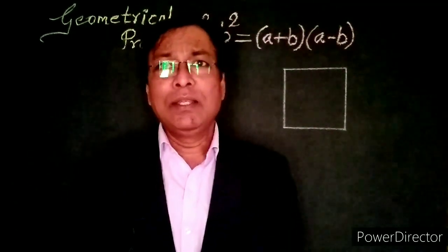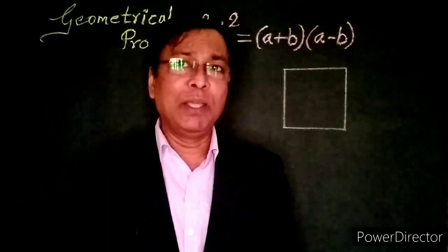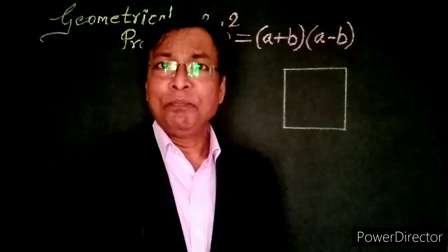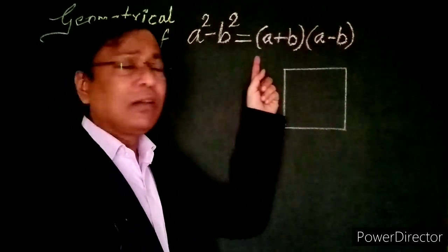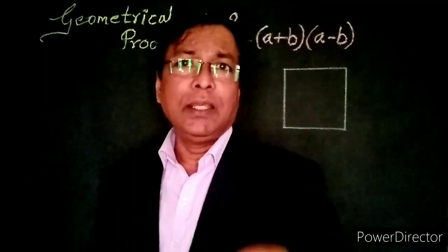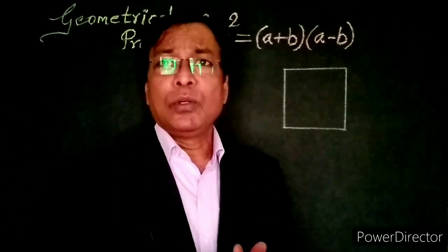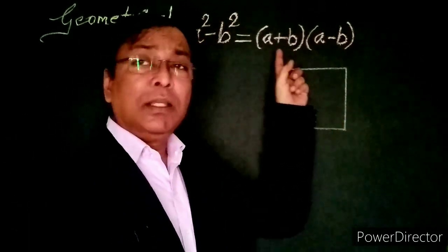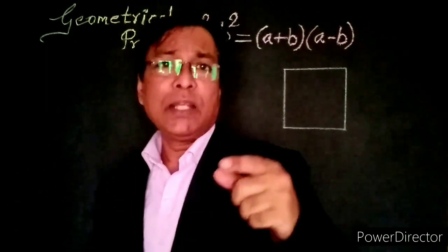In the previous video, I have given you the geometrical and algebraic proof for a plus b whole square equal to a square plus 2ab plus b square, and a minus b whole square equal to a square minus 2ab plus b square. In this video, we are going to see the geometrical proof for the identity a square minus b square equal to a plus b into another bracket a minus b.